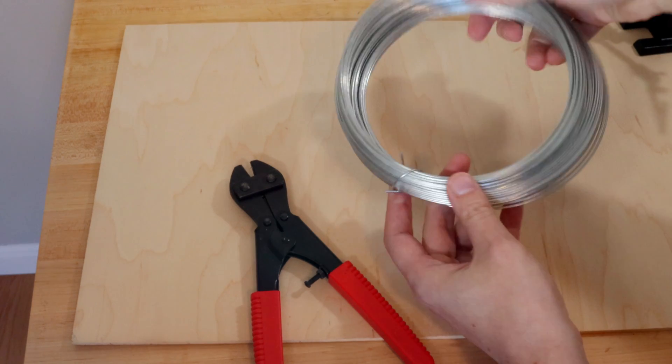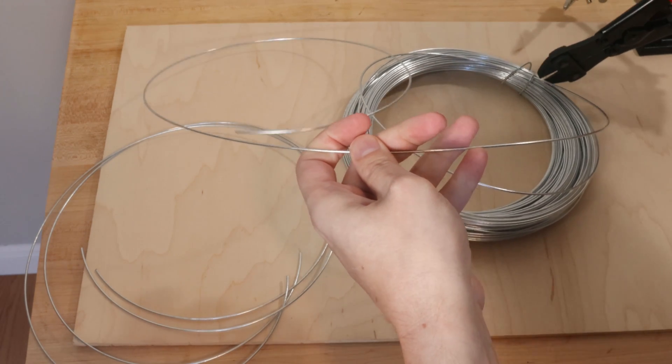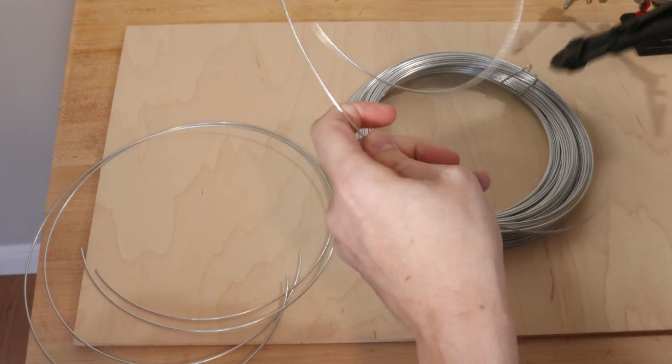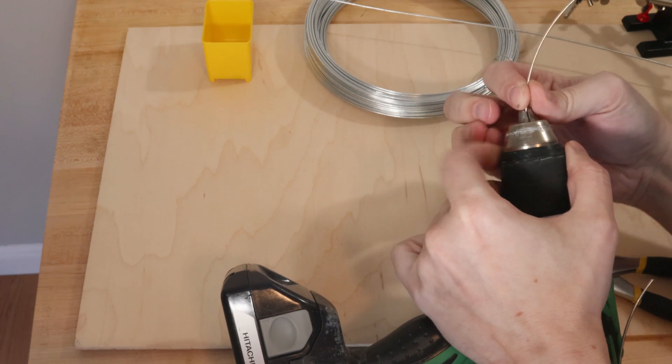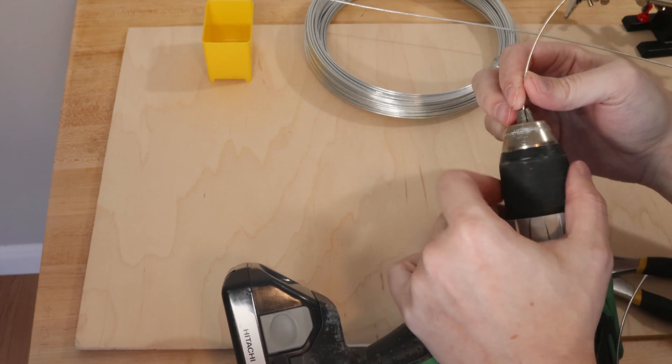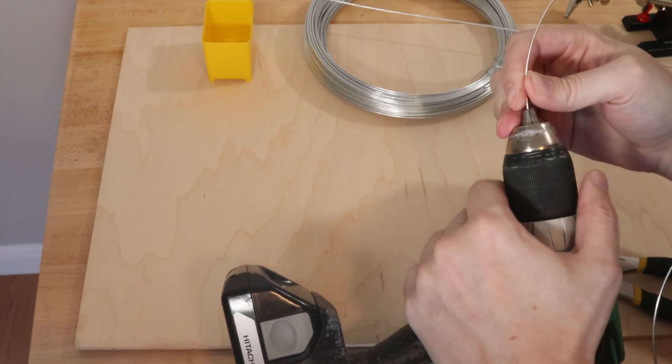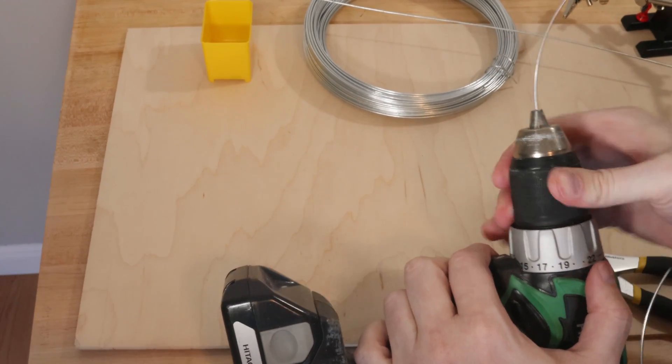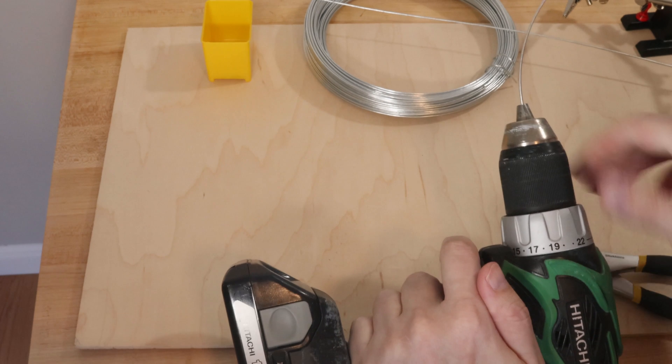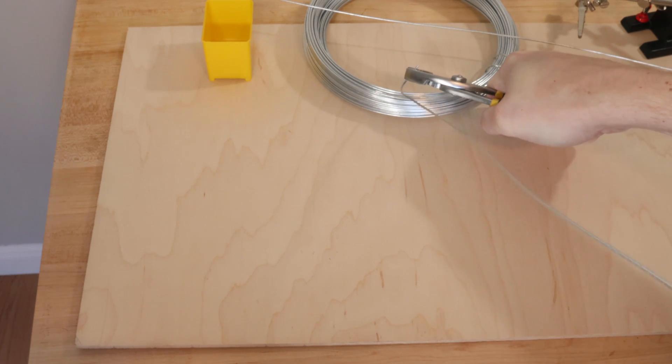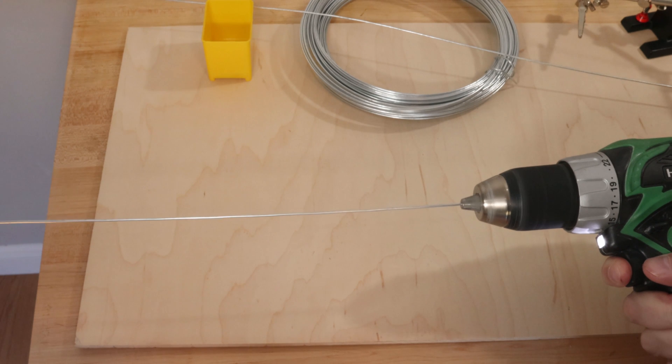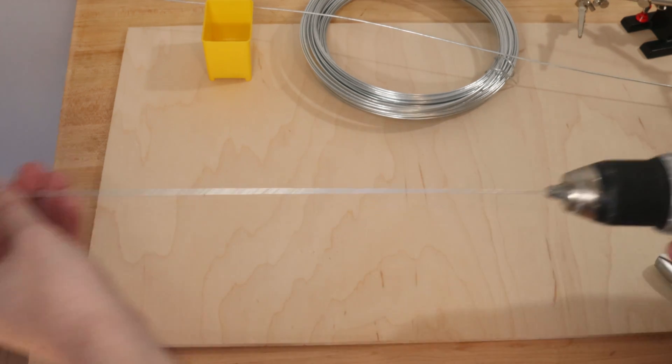The first step is getting the wire ready. I cut it into different lengths. One of the tricks for straightening the wire is to chuck it into a drill. You can then use a pair of pliers and put some pressure on it pulling and spin the drill. The result is a straightened wire.